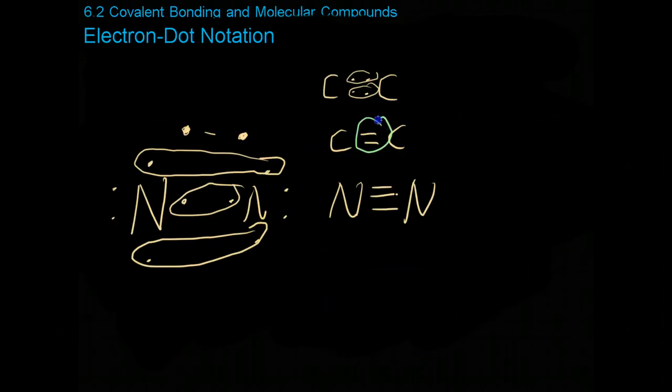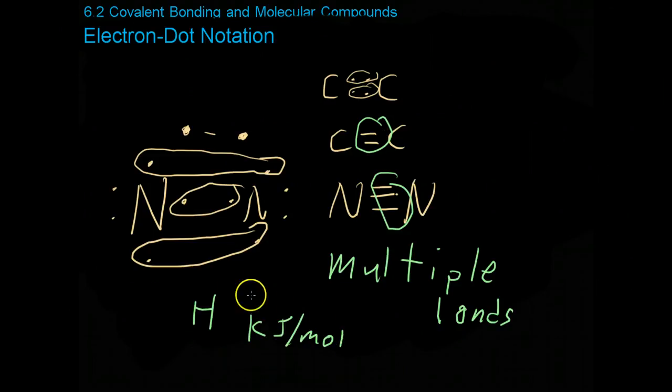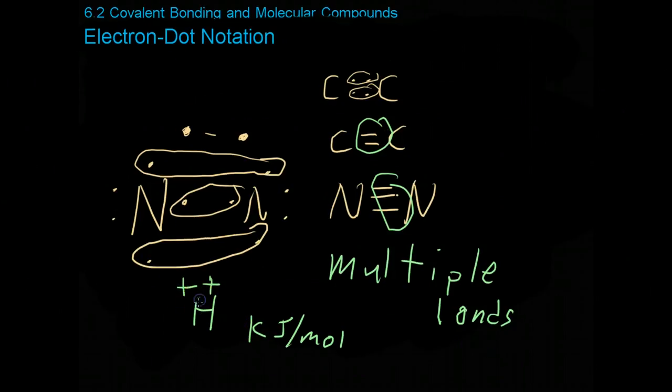Multiple bonds are shorter and a lot stronger than conventional single bonds because as you share more and more electrons, your nuclei will get closer and closer together, which makes them much harder to separate. As well, it makes the atomic radius and the bond length much shorter.